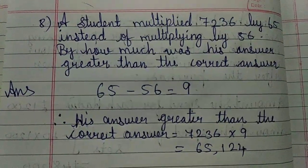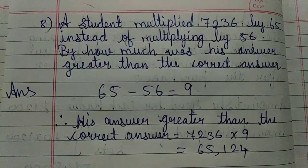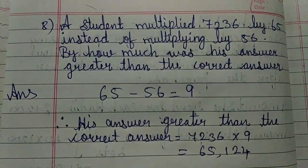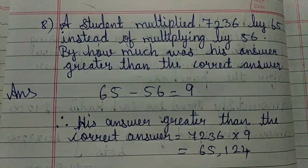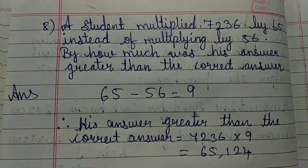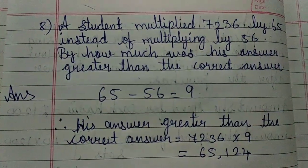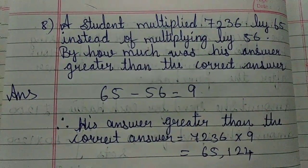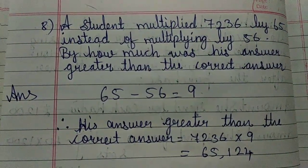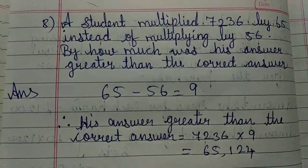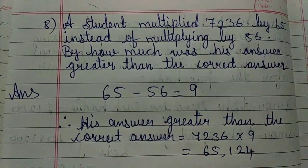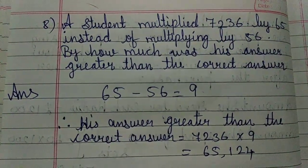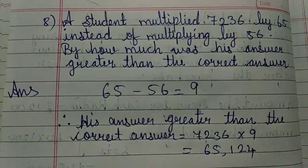Eighth problem. A student multiplied 7236 by 65 instead of multiplying by 56. By how much was his answer greater than the correct answer?